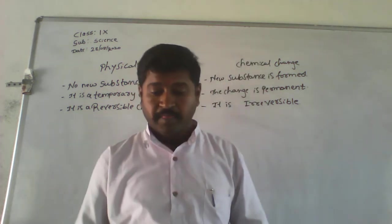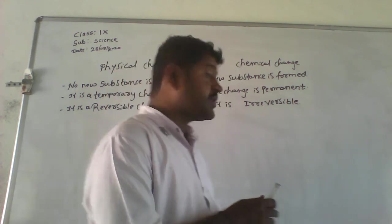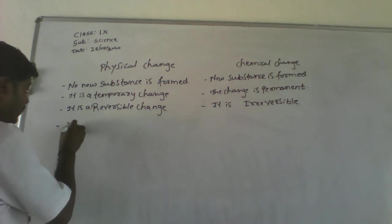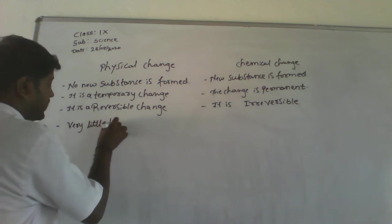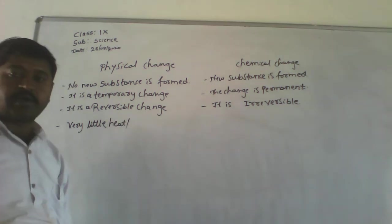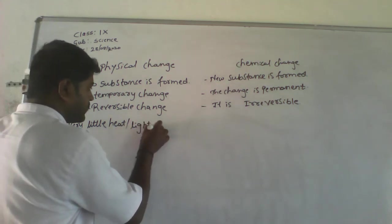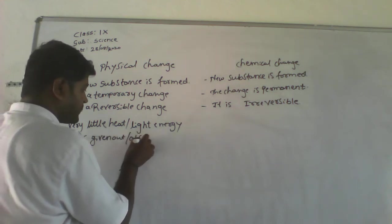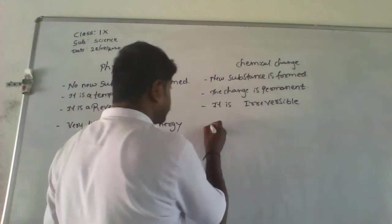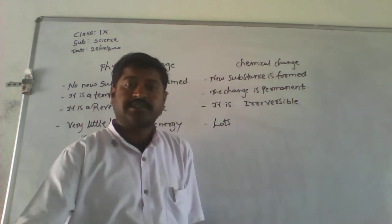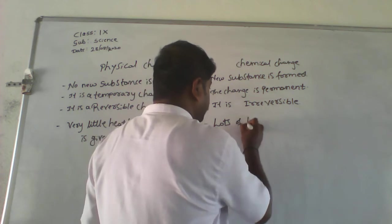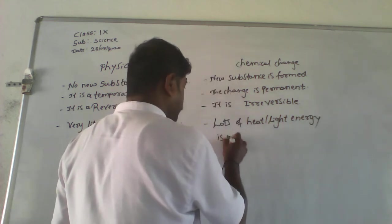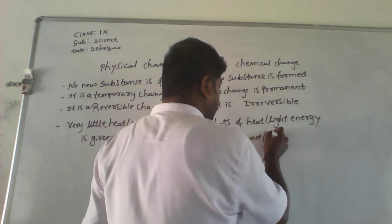Physical change is reversible. Physical change gives out very little heat or light energy — it is either given out or absorbed. Whereas in chemical change, lots of heat or light energy is given out or absorbed.